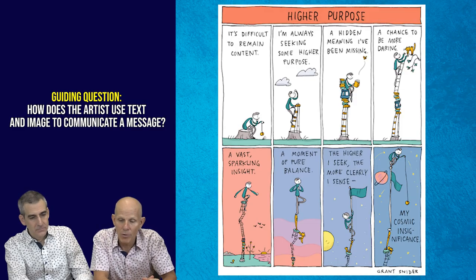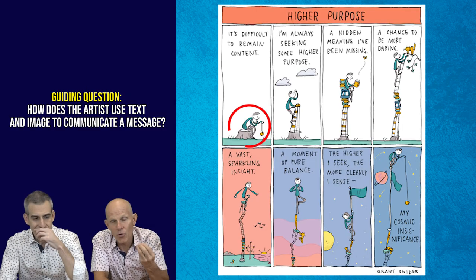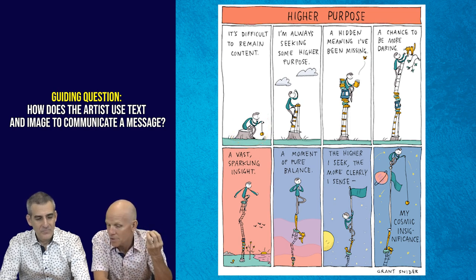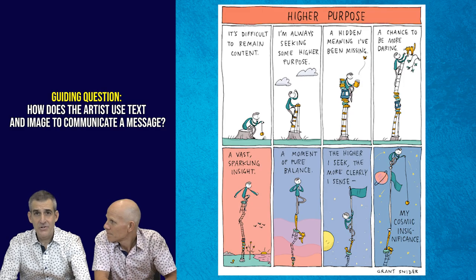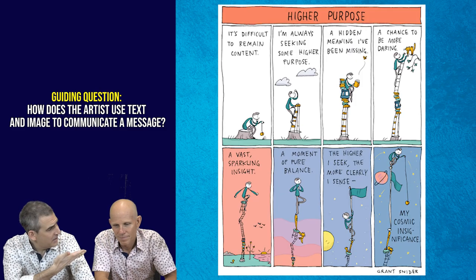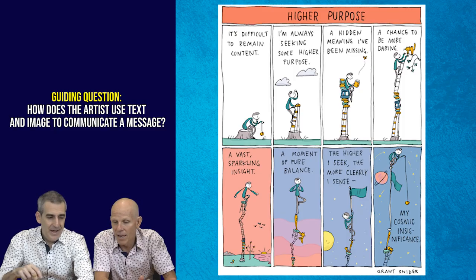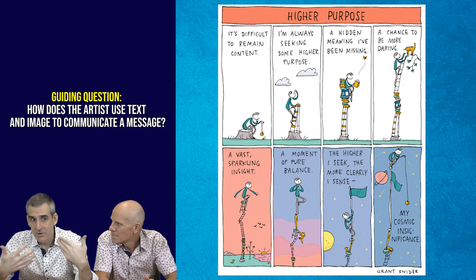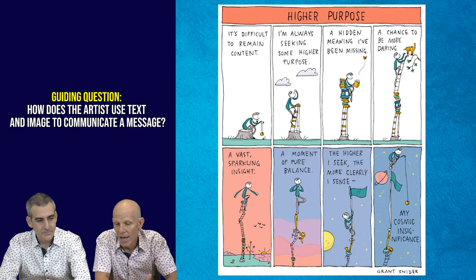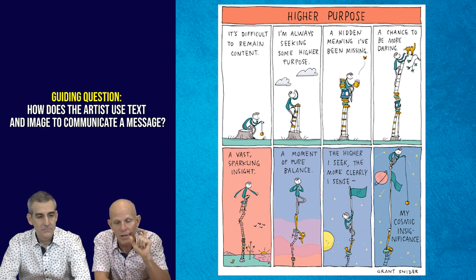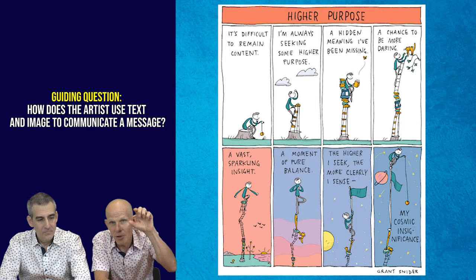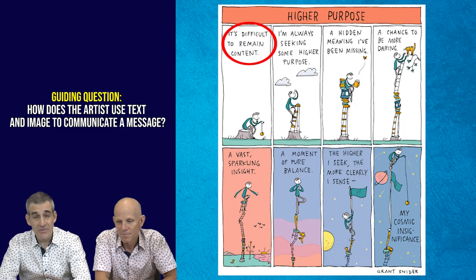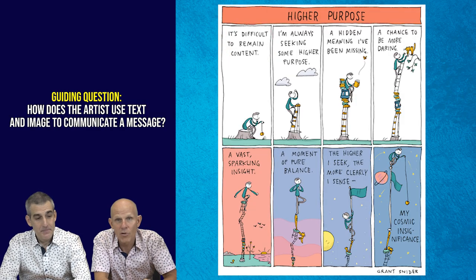In panel number one we see this character drawn in a very nondescript way - his facial features are really indistinguishable, we can't really see details of his face. The posture of the character is interesting as well - he's almost hunched over like Rodin's The Thinker. He's pensive and playing with a yo-yo, something we might imagine doing when thinking in great detail, pondering the future, pondering a higher purpose. We also have voice-over narration - captions written at the top that are not speech bubbles or thought bubbles but the narrator's thoughts, which we can assume are the thoughts and feelings of Grant Snyder.